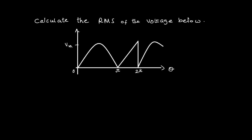So let's look at how we are going to do this. First of all, we have to identify the period, which is the duration it takes for the waveform to complete one cycle. Looking at this waveform, it started from the origin and ended here, because at this point it starts to repeat itself. So we are going to record this value as the period, T equals 2π.